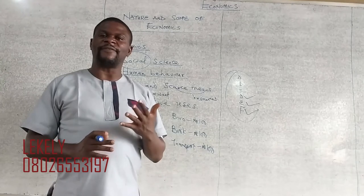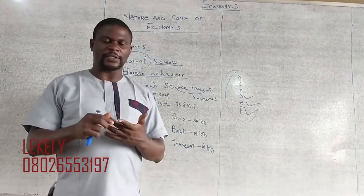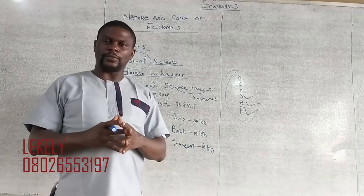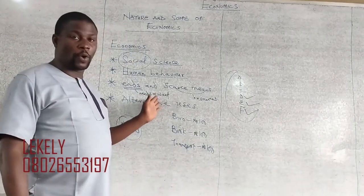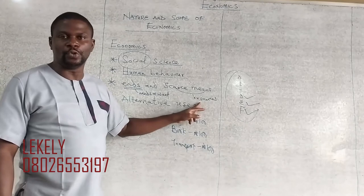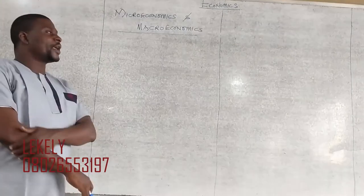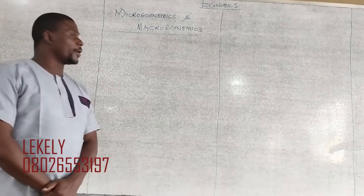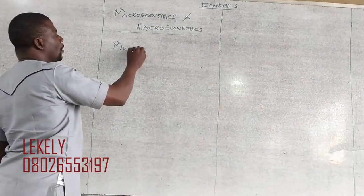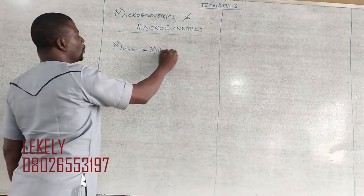The basic economic concepts are five: want, choice, scale of preference, scarcity, and opportunity cost. That is the next thing we are going to look at — how out of all your needs and wants you arrange them according to priority so that your limited resources can meet those things. Today we are also looking at microeconomics and macroeconomics. The word micro comes from the word 'micros,' which means small.